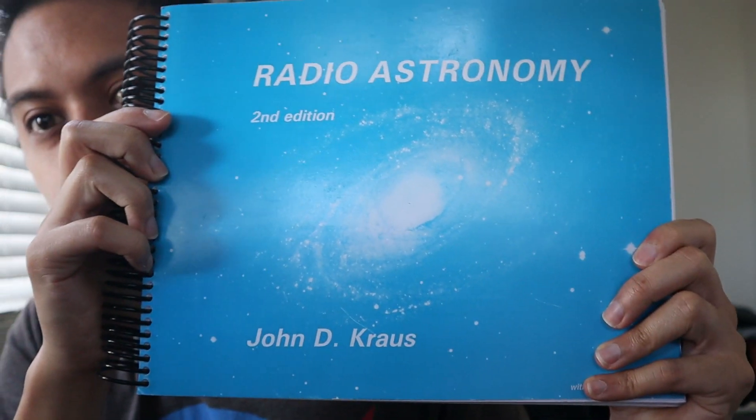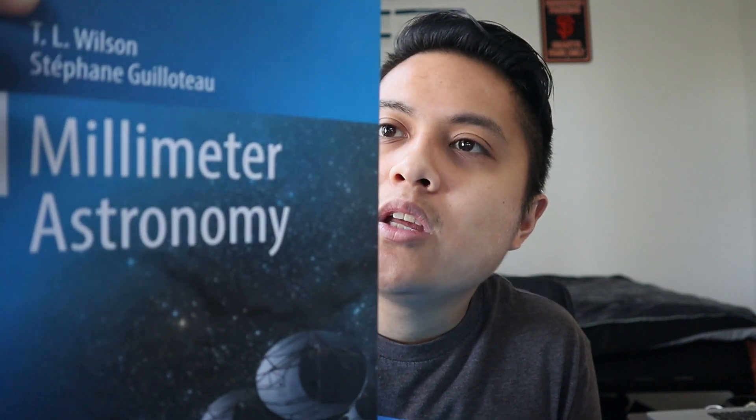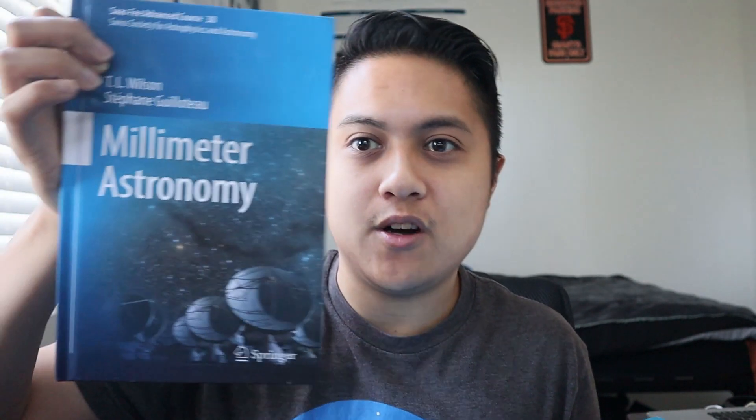These next two books are actually kind of interesting — I bought them as a pair. My research is based on radio astronomy observations from the Atacama Large Millimeter Array, and I thought, I don't have any textbooks on radio astronomy, let me fix that. So I bought Radio Astronomy by John D. Krauss, and I bought Millimeter Astronomy by T.L. Wilson and Stephanie Guilloteau. These are the two books I bought for radio astronomy purposes.